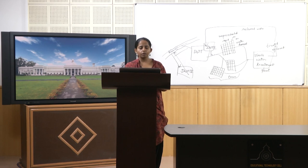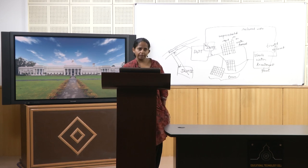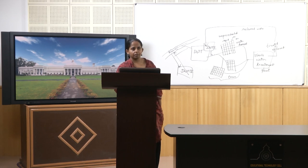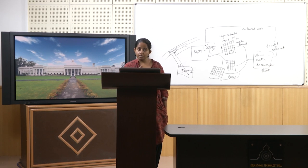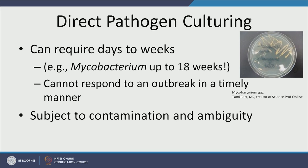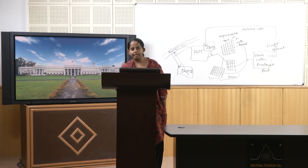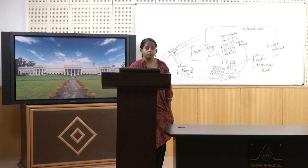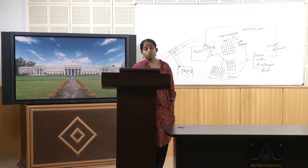This is a major challenge in pathogen detection. Low concentration and low infective doses are a key concern — for hepatitis A virus, Cryptosporidium, and Giardia, anywhere from 10 to 100 microbes or particles are sufficient for a healthy individual to fall sick. Direct pathogen culturing is also an issue — Mycobacterium, for example, takes a very long time to culture. By that time many people could fall sick, so we cannot respond in a timely manner to an outbreak.